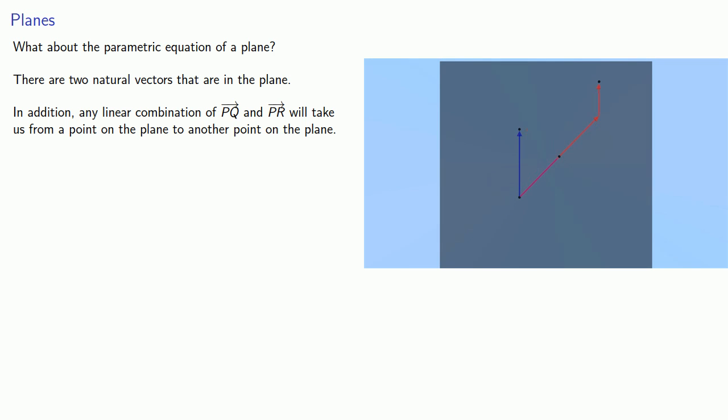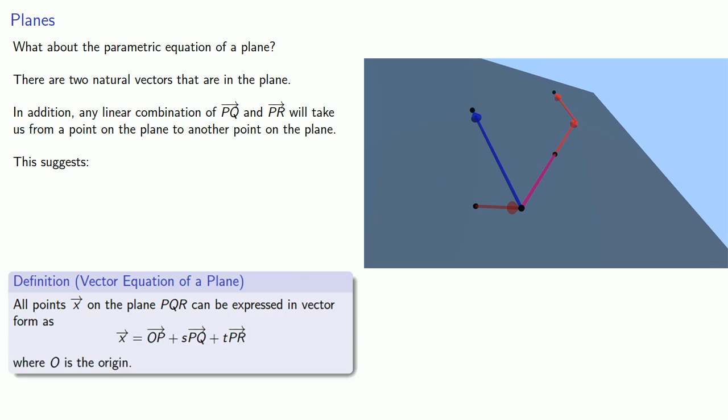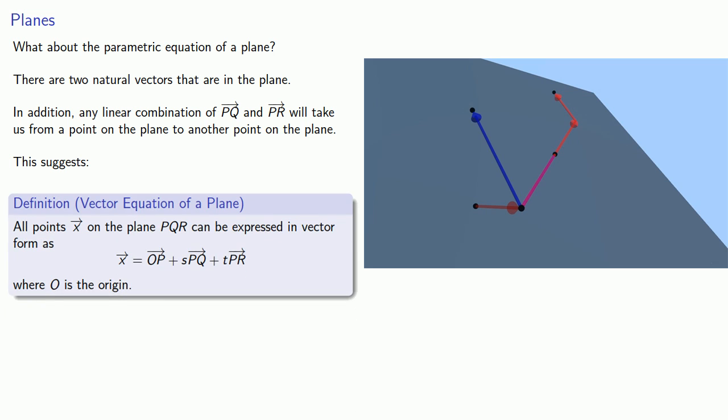And so this suggests a way that we can define the vector equation of a plane, starting at the origin, get to a point on the plane, and then form any linear combination of the two vectors that are already in the plane. And this leads to the following vector equation. So we'll go from the origin to one of the known points on the plane, and then we'll add on any linear combination of two vectors in the plane.